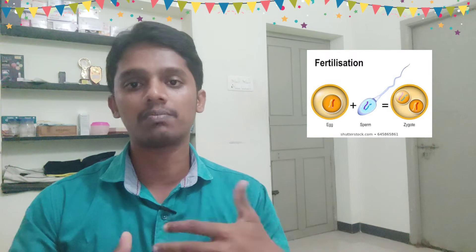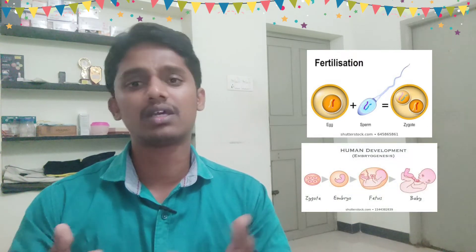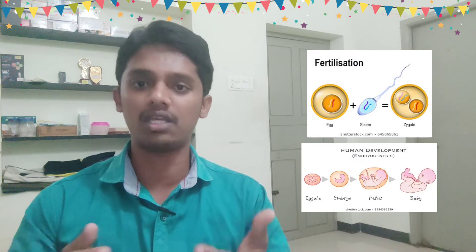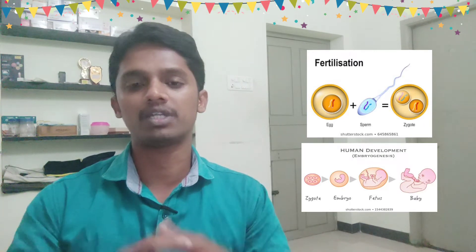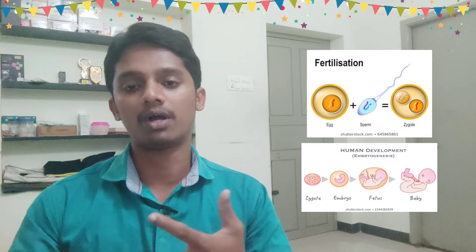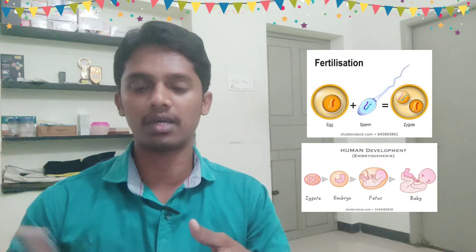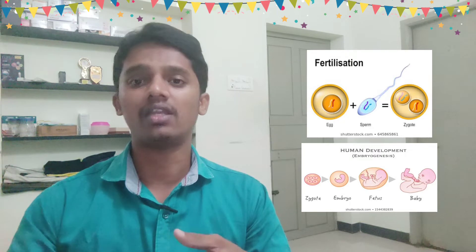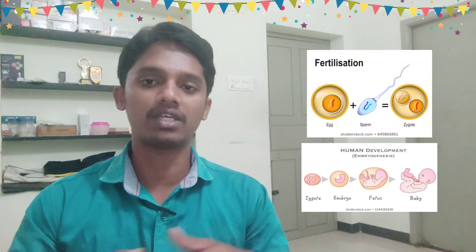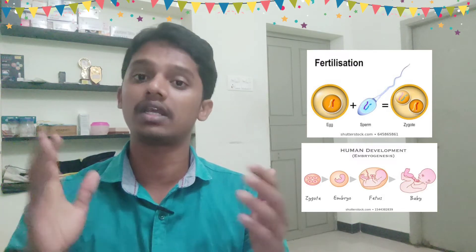The zygote develops into a fetus. In the fetus there are three portions: mesoderm, ectoderm, and a third layer. From these layers, tissues form — epithelial tissue, connective tissue, muscular tissue, and nervous tissue. So overall, from a single cell, trillions of cells are formed.